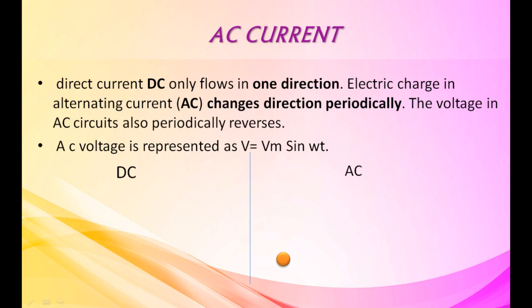AC current, or alternating current: direct current DC only flows in one direction. Electric charge in alternating current changes direction periodically. The voltage in AC circuits also periodically reverses. AC voltage is represented as V equals Vm sin omega t.